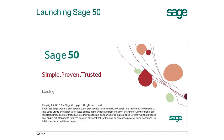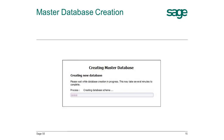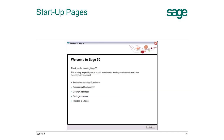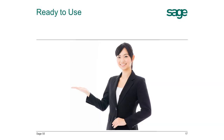A loading screen is displayed when the system is being launched. During the first startup, the master database will be created. A few pages are mandatory to provide the user a general overview of the Sage 50 product and general tips. Congratulations — you have successfully installed Sage 50!